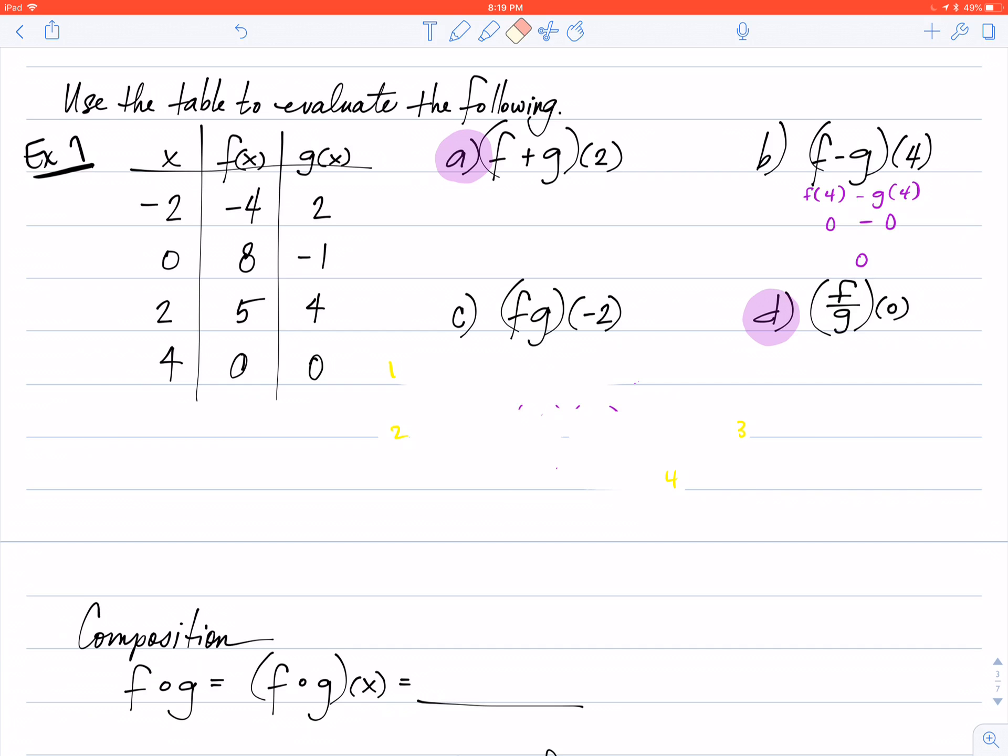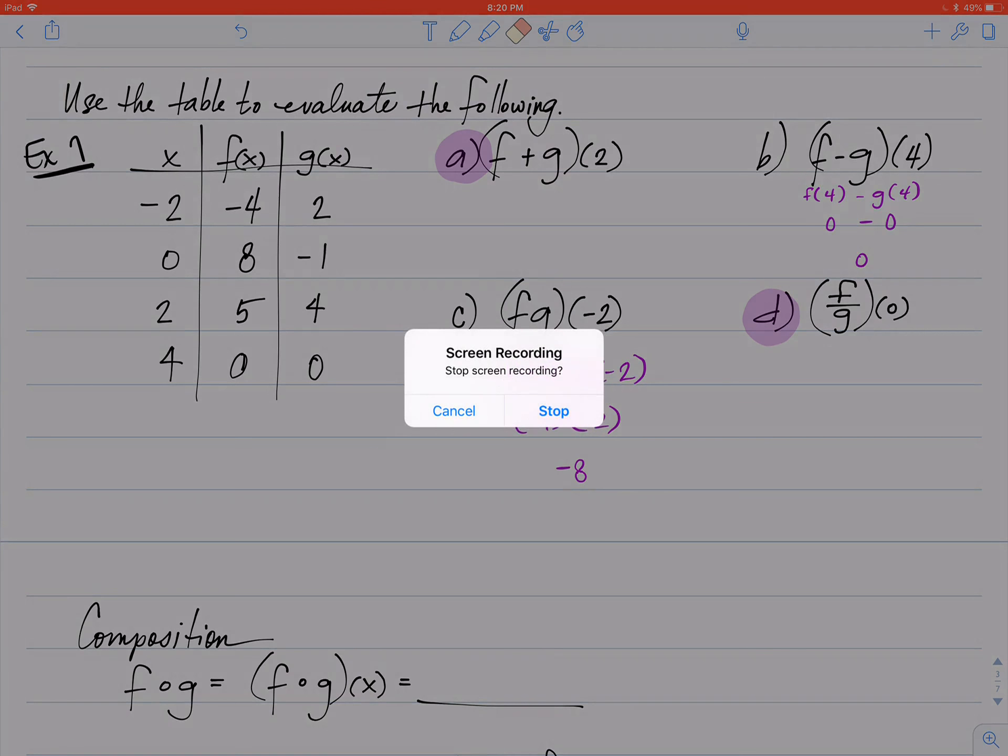Part c then, an example there. F times g of 2. Write it nicely. F of negative 2, you'll notice here, is negative 4, so we'll go ahead and plug that in. G of negative 2 is positive 2. Multiply those two together and you have your negative 8.